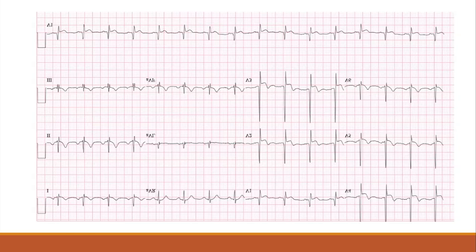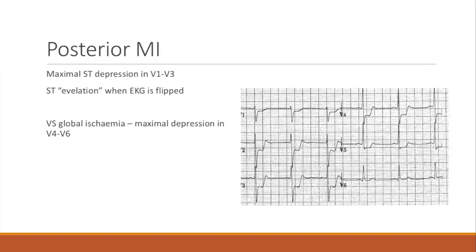This trick has actually been validated through research and it's pretty good for picking up posterior MI. Characteristics of the posterior MI: you're going to have ST depression throughout the precordial leads, but it's going to be maximal in V1 through V3. Rather than global ischemic changes maximal in V5-V6, you'll have ST elevation when you do the flip-the-EKG trick. The other important difference is you've got down-sloping ST segment depression versus the up-sloping ST segment depression of global ischemic changes. So: flip the EKG, maximal depression V1 through V3, down-sloping ST depression — that's isolated posterior MI.